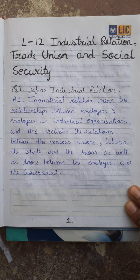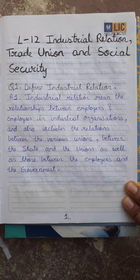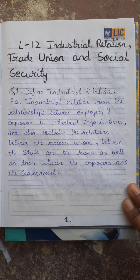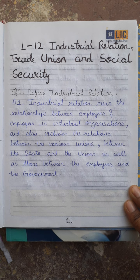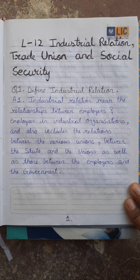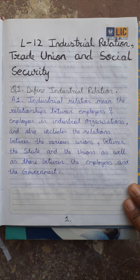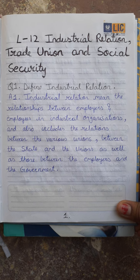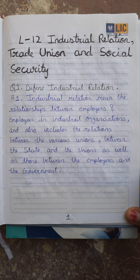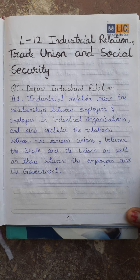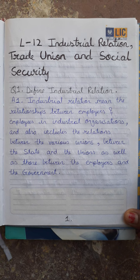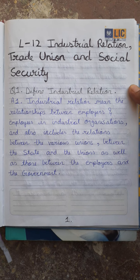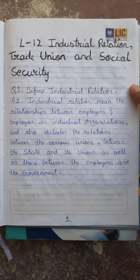In an industry, there are three sections of society. First, workers — that means the employees. Second, the employers, which means the management of the company. And third, the government. Therefore, to ensure harmony and cooperation in an industry, it is important that these three sections — employer, employee and the government — work consistently with each other. This defines industrial relation.